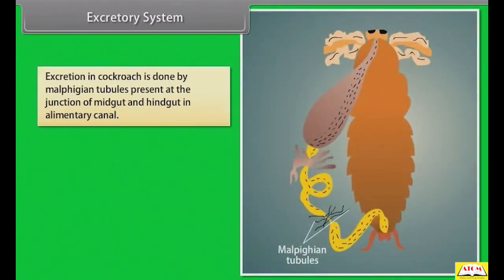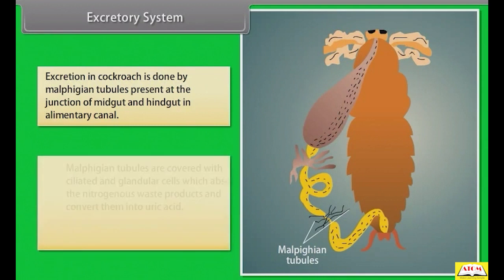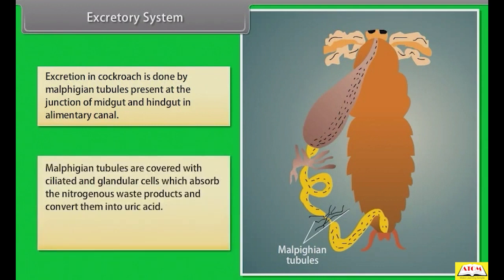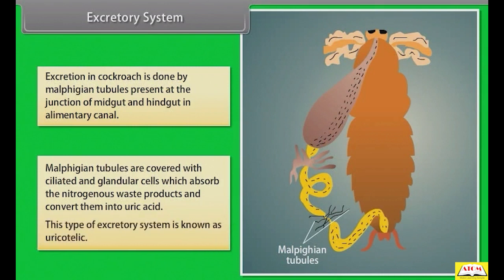Excretion in cockroach is done by Malpighian tubules present at the junction of midgut and hindgut in the alimentary canal. Malpighian tubules are covered with ciliated and glandular cells which absorb nitrogenous waste products and convert them into uric acid. This type of excretory system is known as uricotelic.